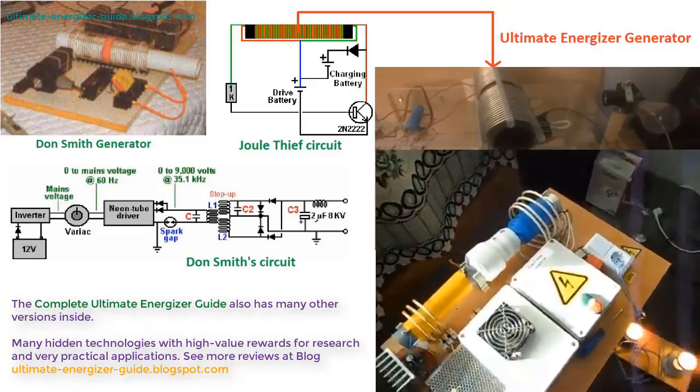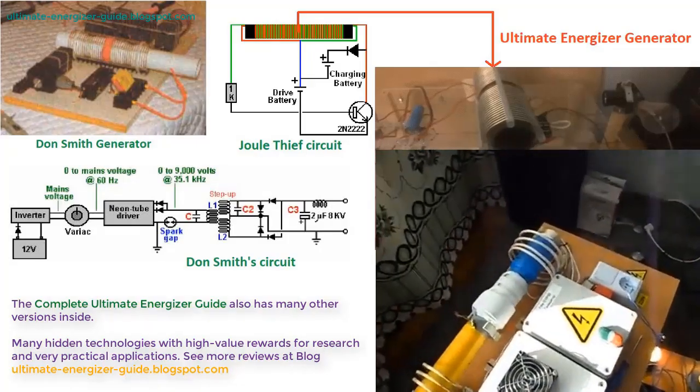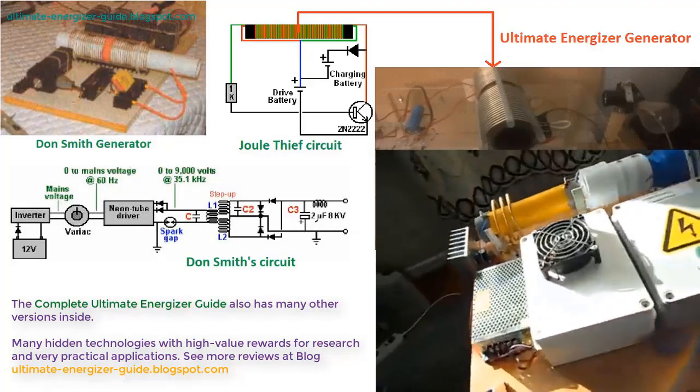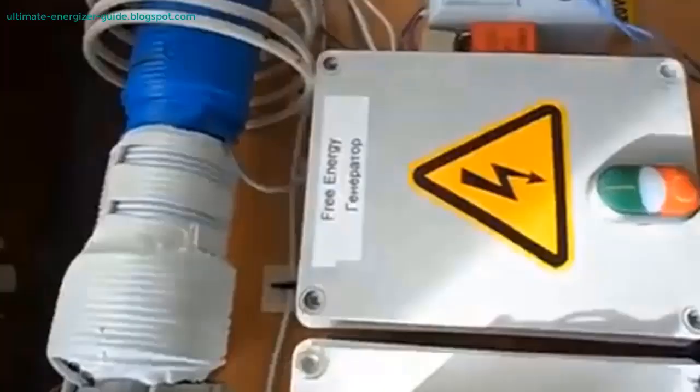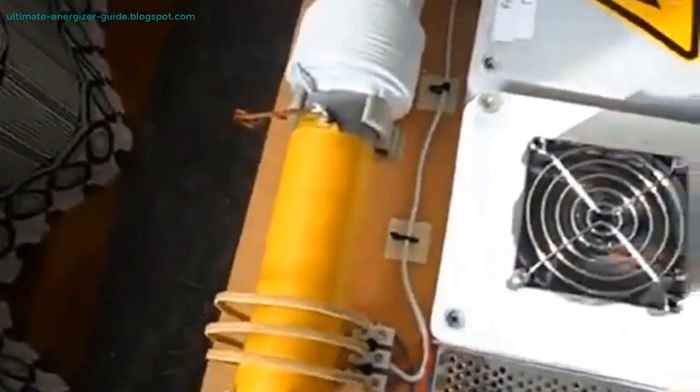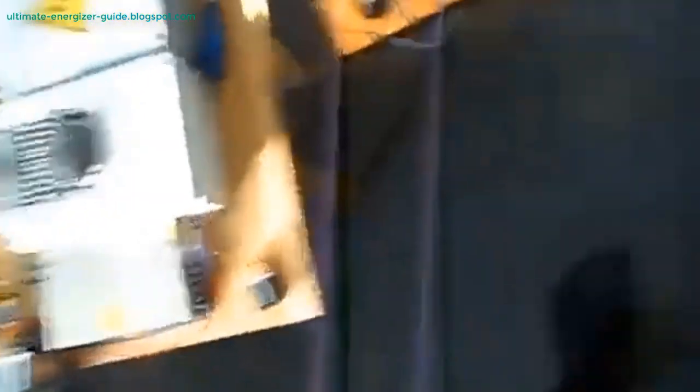The complete Ultimate Energizer Guide reveals the secrets of generating electricity using electronic components and coils, with power output depending on the system's expansion. This sets it apart from the Joule thief circuit and Don Smith circuit, which are commonly shared online. Moreover, the circuit described in the Ultimate Energizer Guide is unique and distinct from the Joule thief circuit and Don Smith circuit.